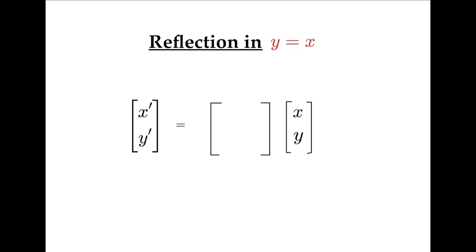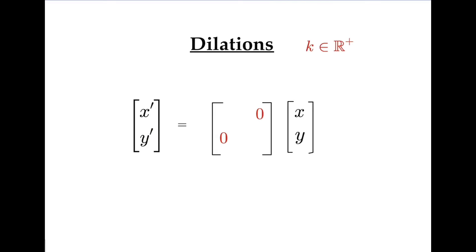Finally, let's review dilations. Dilation from the x-axis affects the y-value only, so dilation from the x-axis by some positive real number k results in 1 and k in these positions on the main diagonal.